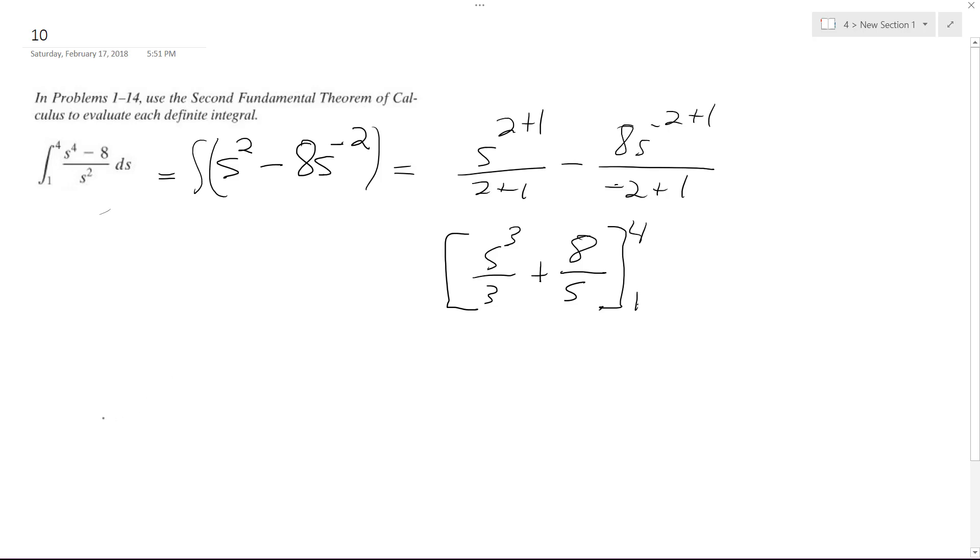All right, so we get four cubed over three plus eight over four. This is our four and then minus one cubed over three plus eight over one.